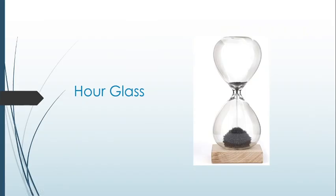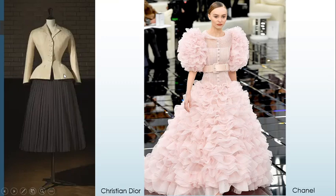Next we have the hourglass silhouette — fullness on top, pinched in at the waist, and full at the bottom. This is another very traditional silhouette, especially for women, as it mimics the female body's own shape. Here we have the historically famous Bar Suit from Christian Dior, which really emphasizes that hourglass silhouette. Here's a more modern Chanel example with padded shoulders and beautiful ruffles giving fullness up top, taken away at the waist, then filling out again toward the bottom.